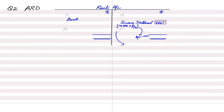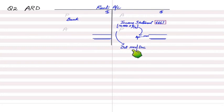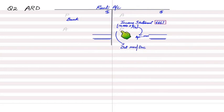The second payment on 1st July covers July, August, and September. The third payment on 1st October covers October, November, and December. This is important because our year ends in November, but we have paid rent up to December — meaning we have paid one extra month's rent. This extra payment is prepaid rent at the end of the year.